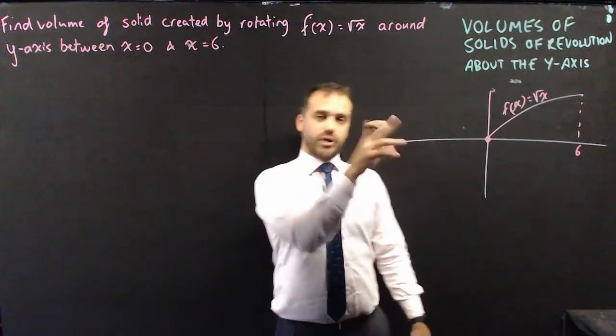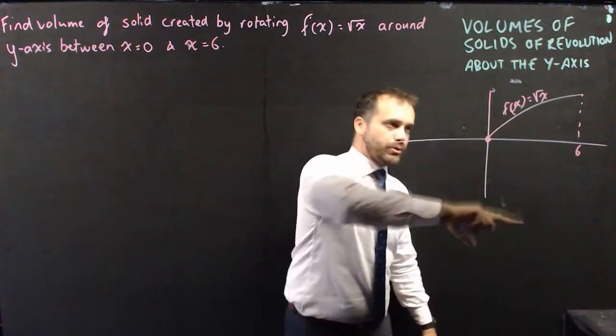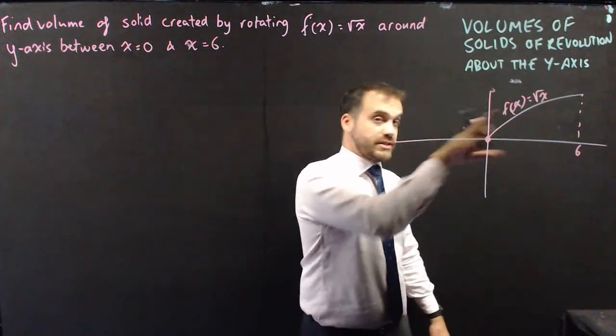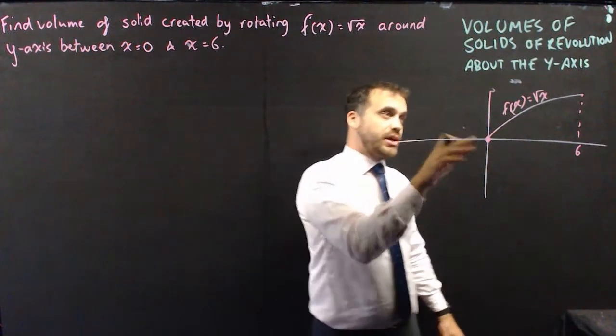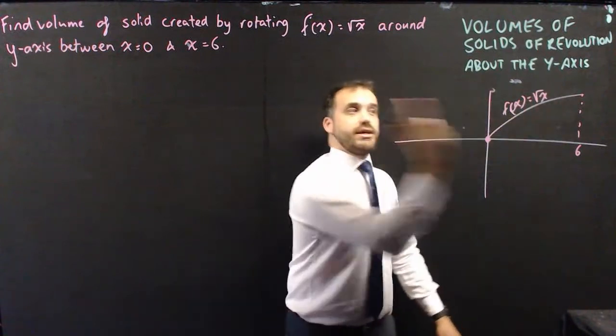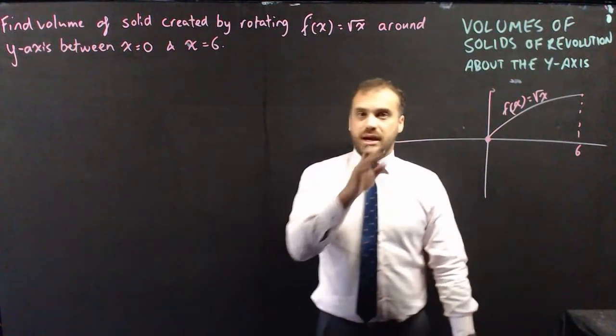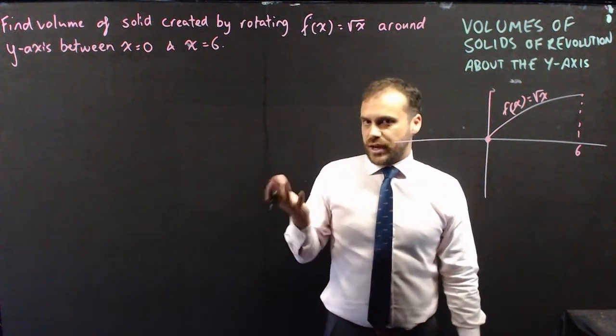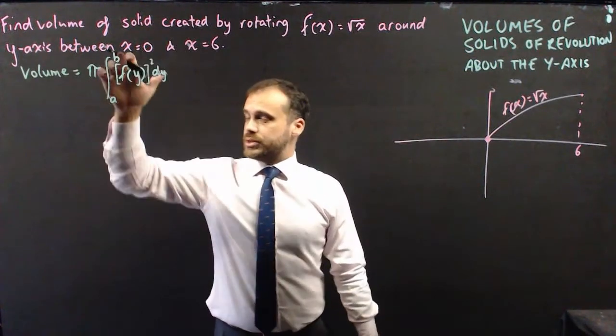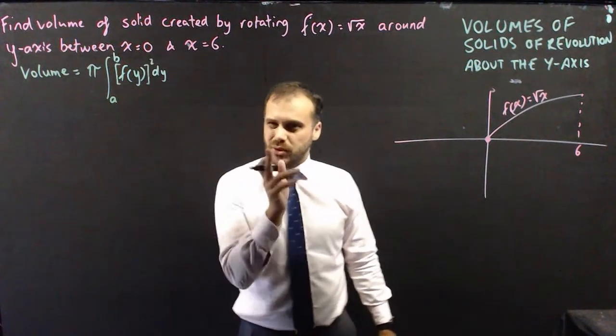If you saw my previous video on volumes of solids of revolution, you'll know we were rotating around the x-axis this function, f(x) equals root x. This time I'm going to take the same function, f(x) equals root x, and rotate it around the y-axis and find that volume. So we already know our formula for that: pi times the integral between b and a of f(y) squared with respect to y.